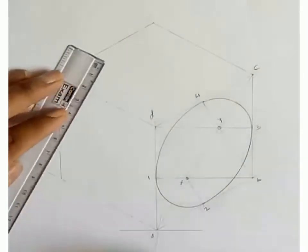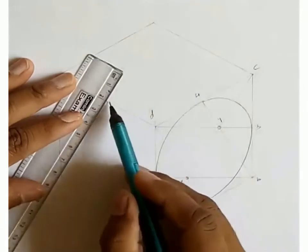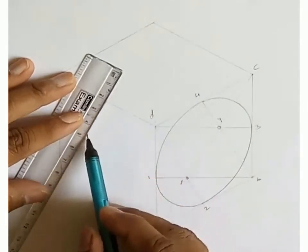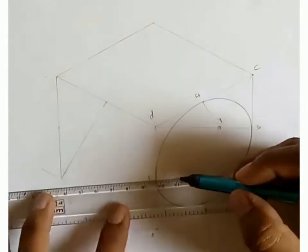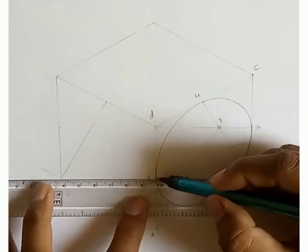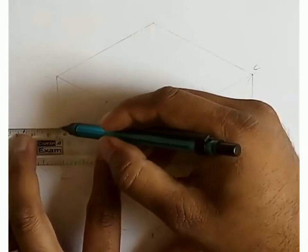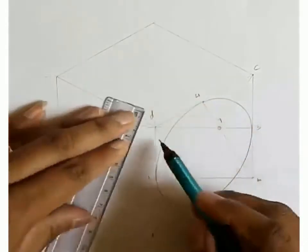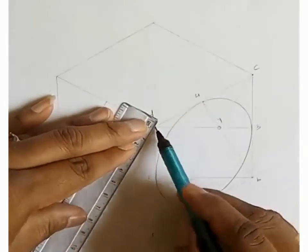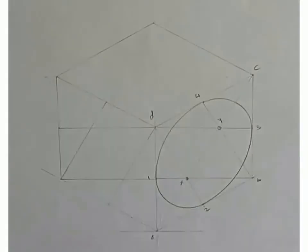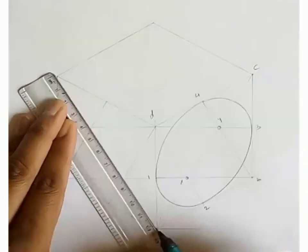Join midpoints of sides to opposite corner points. Then draw a longer diagonal.